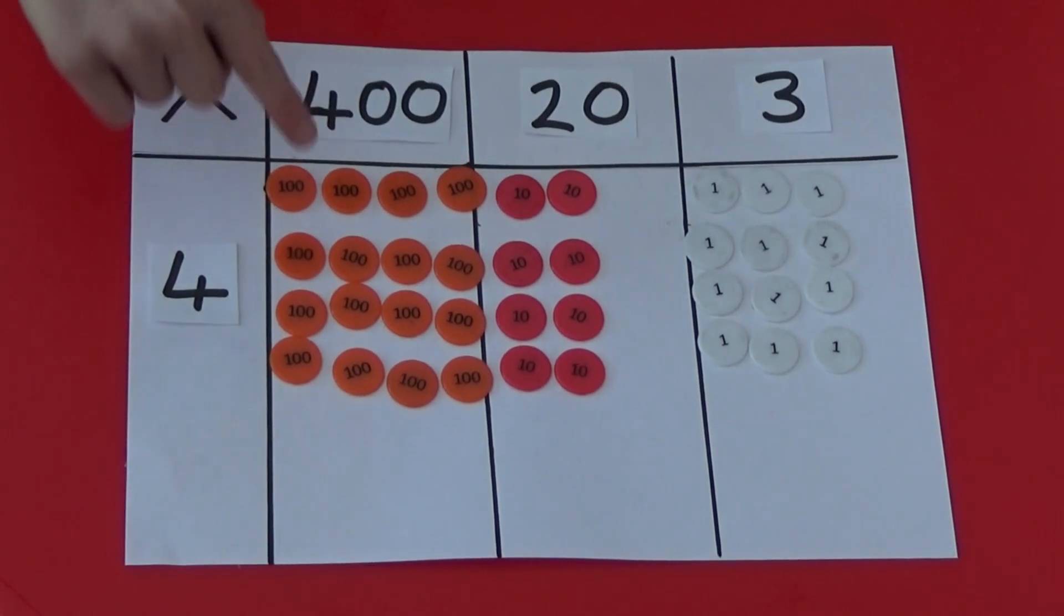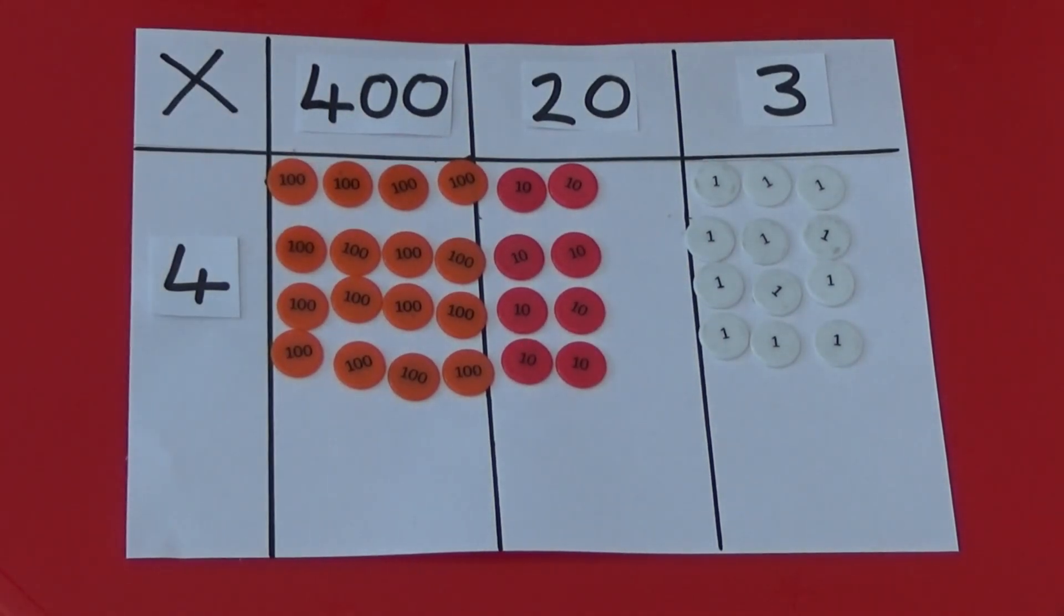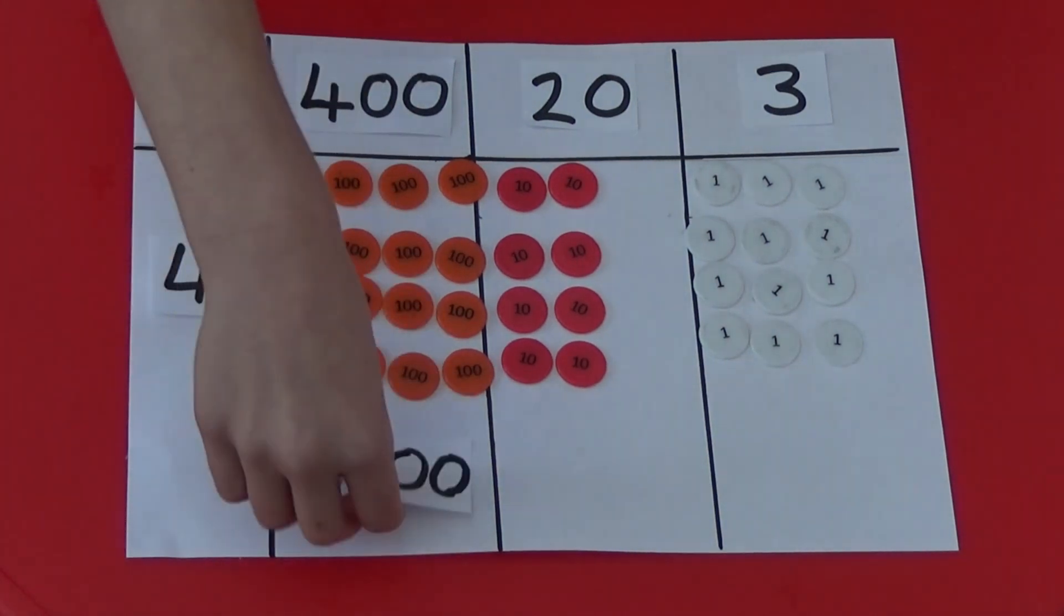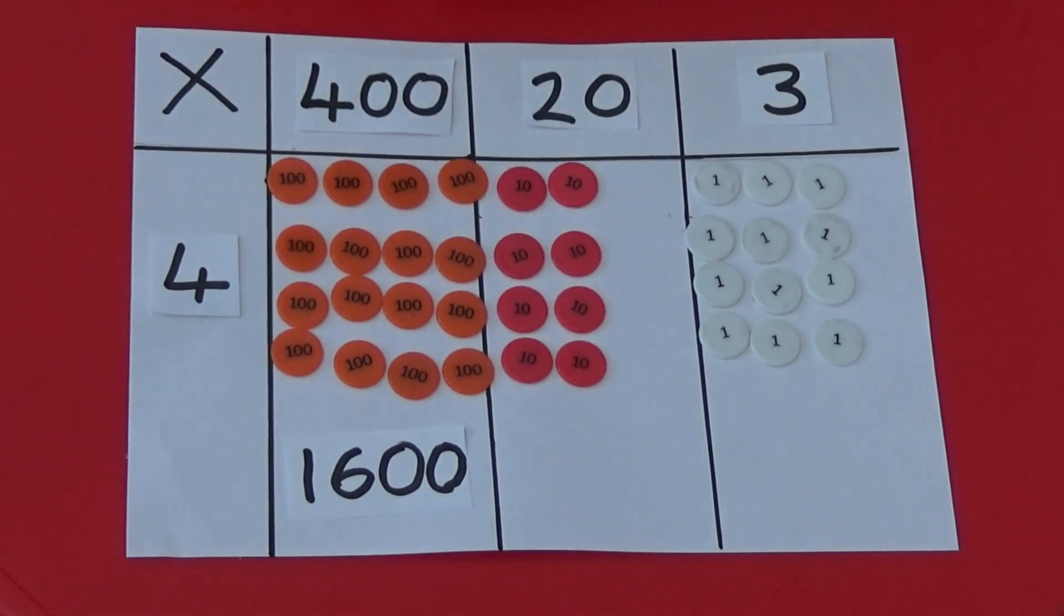We now need to add up how many hundreds we have, how many tens we have, and how many ones we have. We have 4, 8, 12, 16 hundreds, which is 1,600. We have 2, 4, 6, 8 tens, which is 80.